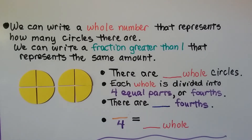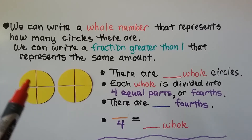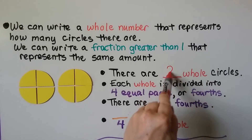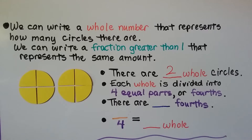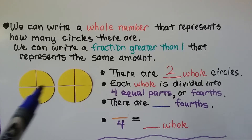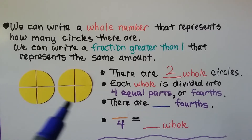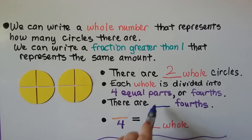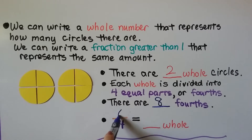We can write a whole number that represents how many circles there are, and we can write a fraction greater than one that represents the same amount. Here we have one whole circle and another whole circle, so there are two whole circles. Each whole is divided into four equal parts — one, two, three, four; one, two, three, four. There are four in each, so we have four, five, six, seven, eight-fourths. We have eight-fourths, and eight-fourths is equal to two whole.